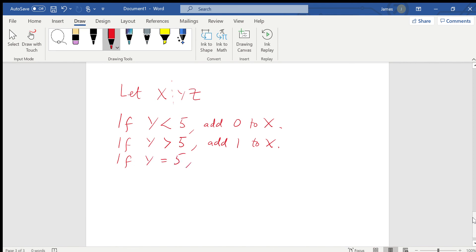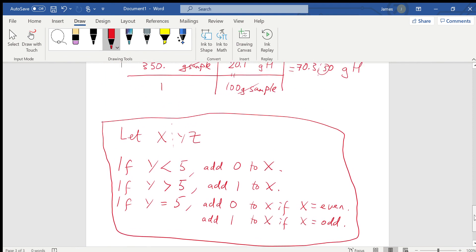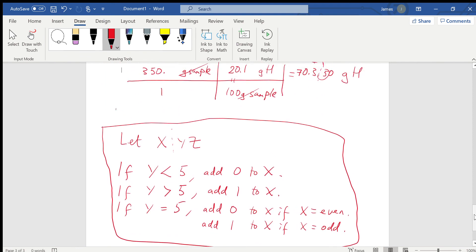But what if Y is equal to five? Well then you've got two things. You add zero to X if X is even, and you would add one to X if X is odd. These are the rounding rules that will follow in this class. So we're going to adopt these rounding rules.